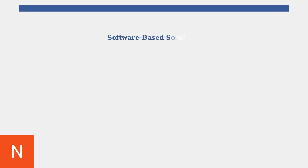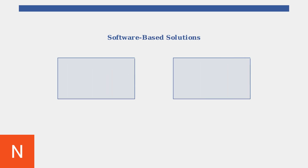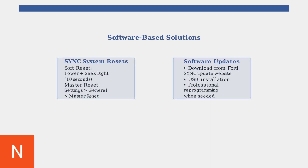Software-based solutions include Sync system resets and software updates. You can try a soft reset by holding power and seek forward for 10 seconds, or perform a master reset through the settings menu. Software updates can be downloaded from Ford's website and installed via USB.